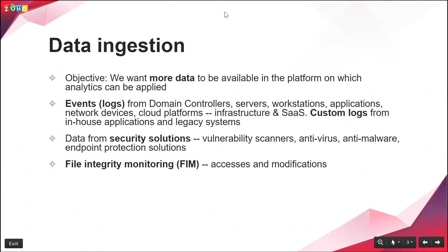The third type of data to think about is file integrity monitoring data — monitoring the accesses and modifications made to your sensitive files and folders, which is the crux of IT security. It all boils down to protecting sensitive data. So when deploying a SIEM solution, think about these three data sources: event logs, security solution data, and file integrity monitoring data. This assessment and planning can really help you see fantastic results from your SIEM deployment.